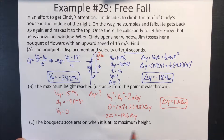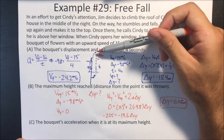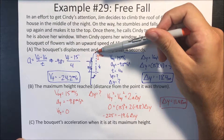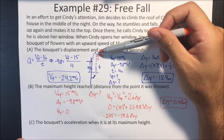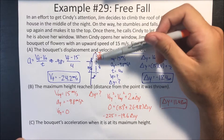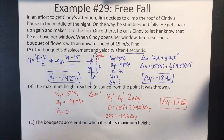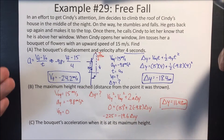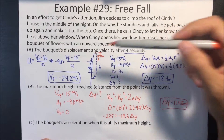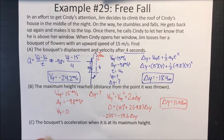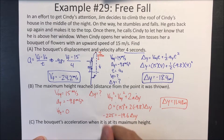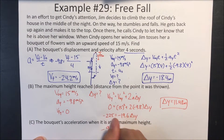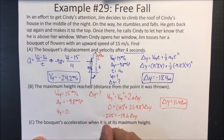What is the bouquet's acceleration when it is at its maximum height? At the very top, the velocity is zero. However, the acceleration is always going to be negative 9.8 meters per second squared whenever an object is just in the air on Earth. Gravity is always trying to pull it down with an acceleration of negative 9.8 meters per second squared.